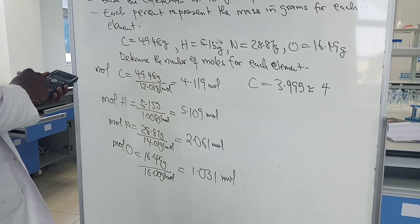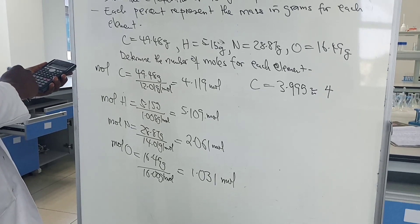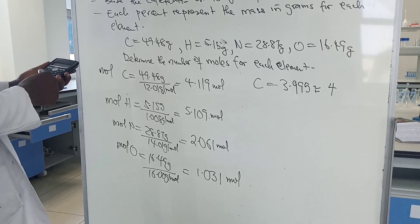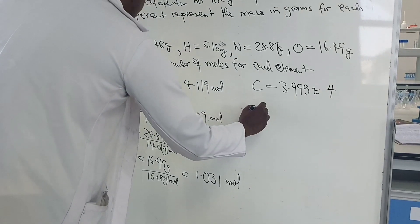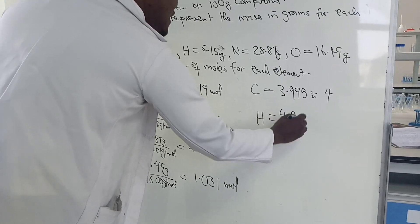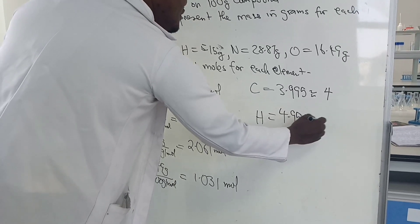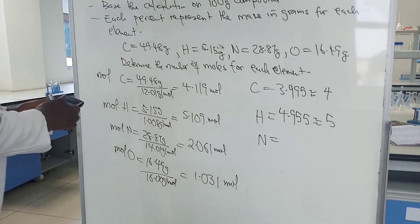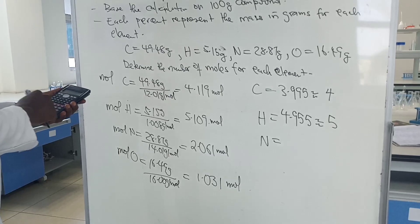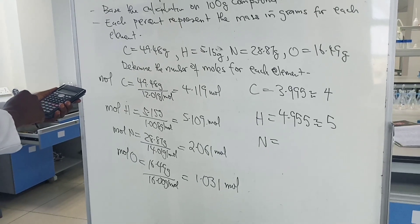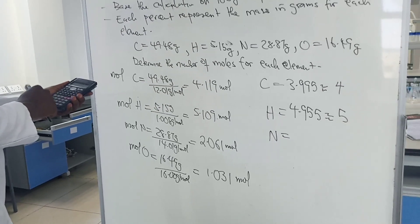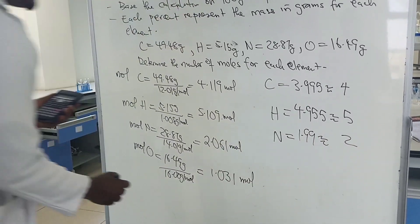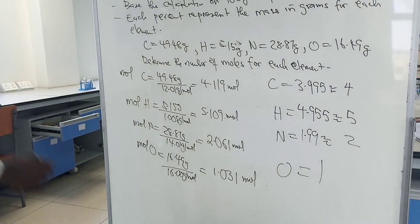For hydrogen: 5.109 divided by 1.031 gives us 4.955, which rounds to 5. For nitrogen: 2.061 divided by 1.031 gives us 1.99, which rounds to 2. For oxygen, the value is 1.